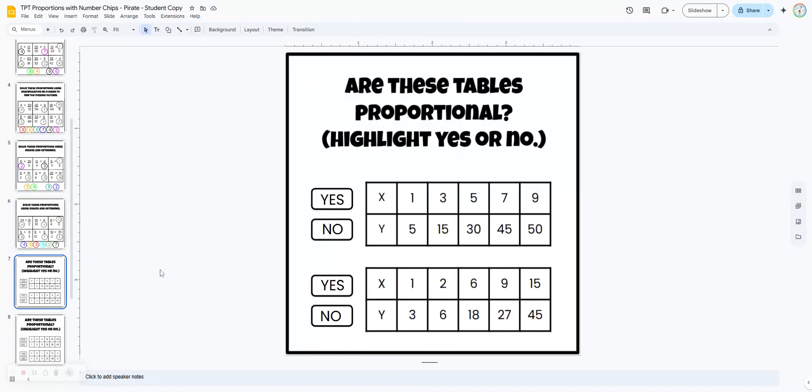Slide 7 has some tables and they may be proportional or not. They have to determine that. So here they look at the table and they can see that they're multiplying their x term times 5 to get the y term. Same thing here. But it doesn't work when they get to this column. So in order for this table to be proportional all of the ratios have to be equivalent. And so since they're not we're going to highlight no.